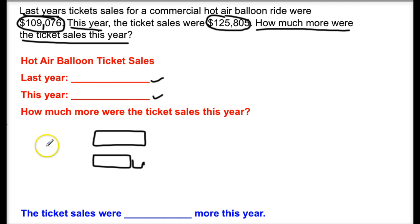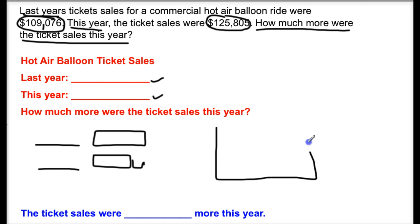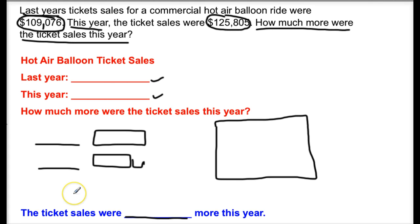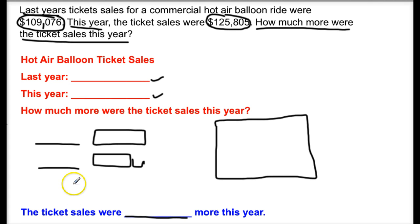So you need to label the bar models, then show your work — are you adding or are you subtracting? Then write your answer: the ticket sales were blank more this year. I want you to work on that and show your work in your journal.